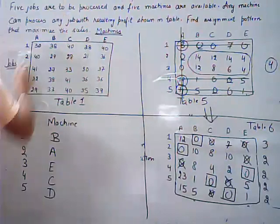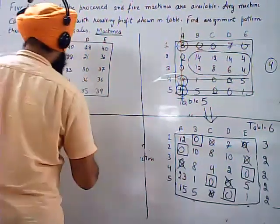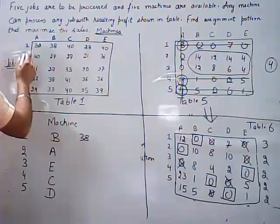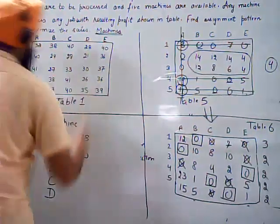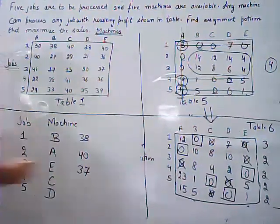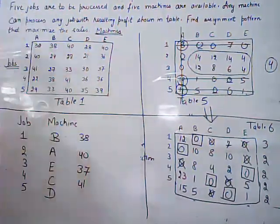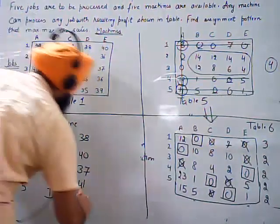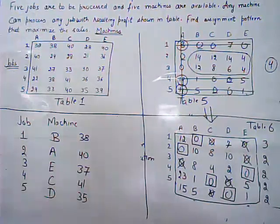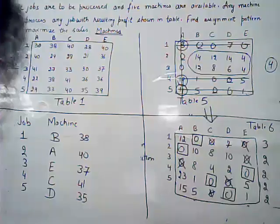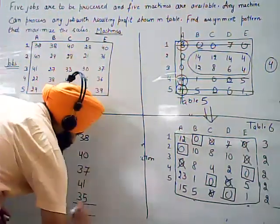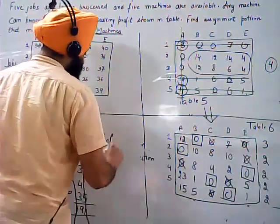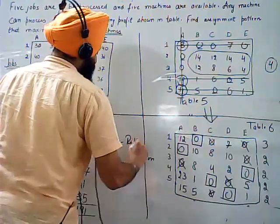Reading the profit values from the original table: job one to B is 38, job two to A is 40, job three to E is 37, job four to C is 41, and job five to D is 35. Adding all these values gives a total profit of 191 rupees. This is our required maximum profit.